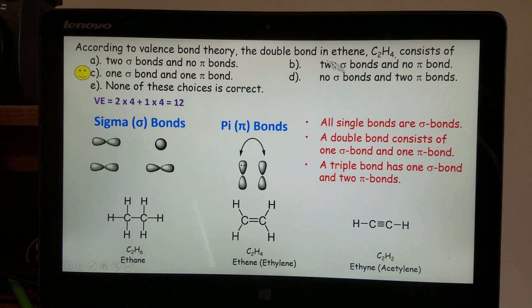However, if the question asks how many sigma, how many pi bonds are in the ethylene molecule, that will be one, two, three, four, each single bond is a sigma bond, so four.